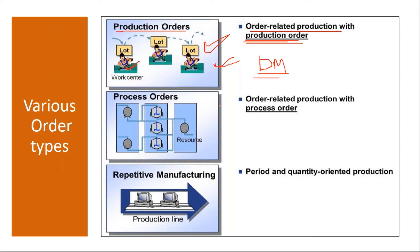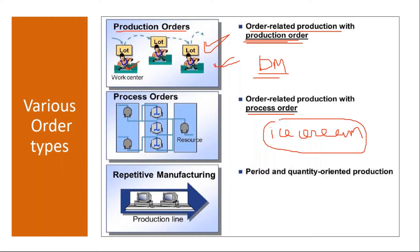Whereas in process manufacturing, once you manufacture the product, you cannot go back to the original materials from which it was manufactured. For example, ice cream — you manufacture it using some powders and liquids, but once you make the ice cream, it's not possible to recover the original materials. That is called process manufacturing, and there we will be using process orders. We also have repetitive manufacturing, which we will cover in subsequent classes.